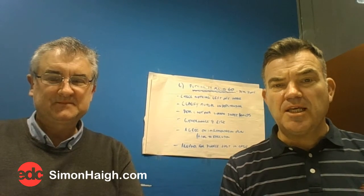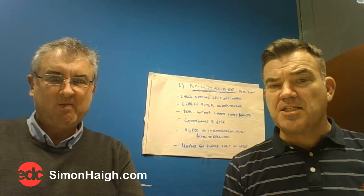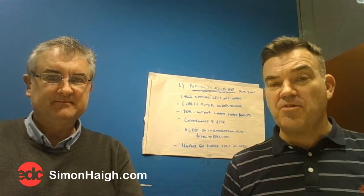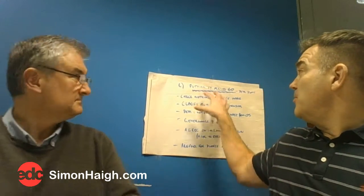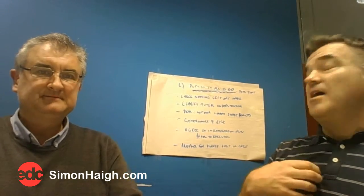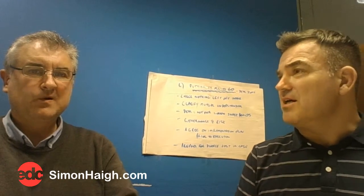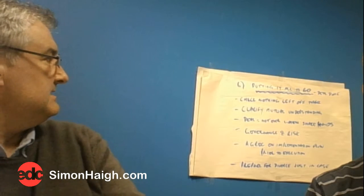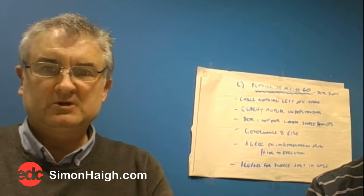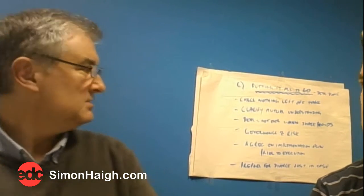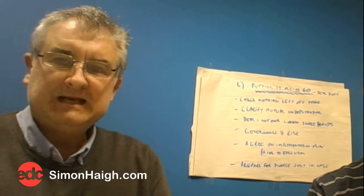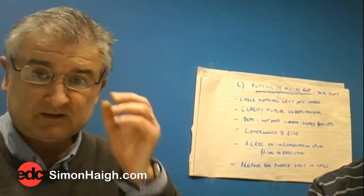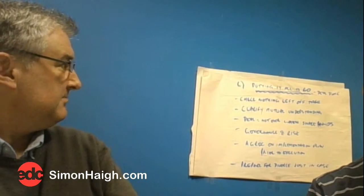We're now on the sixth stage of the 6P deal-making process — the deal is done. But this stage is really about dotting the i's and crossing the t's. It's the less glamorous end of deal making, but this is where 80% of deals fall apart, so it's very important.